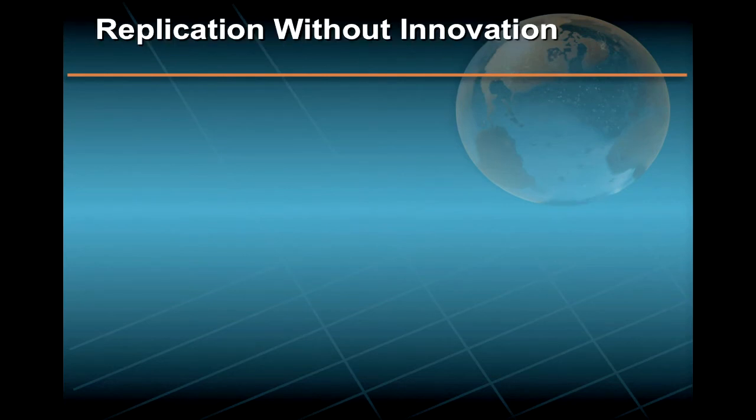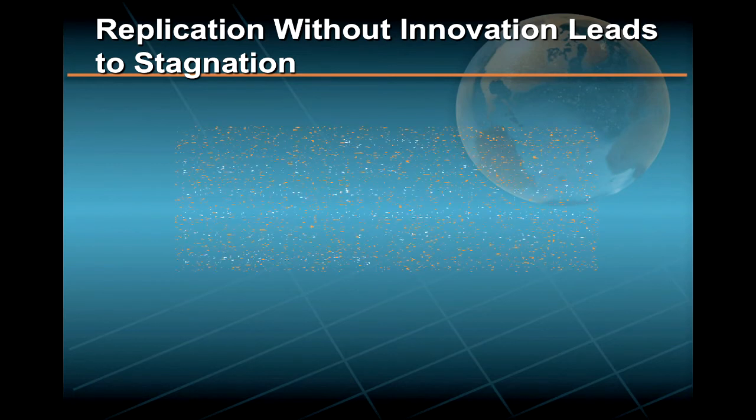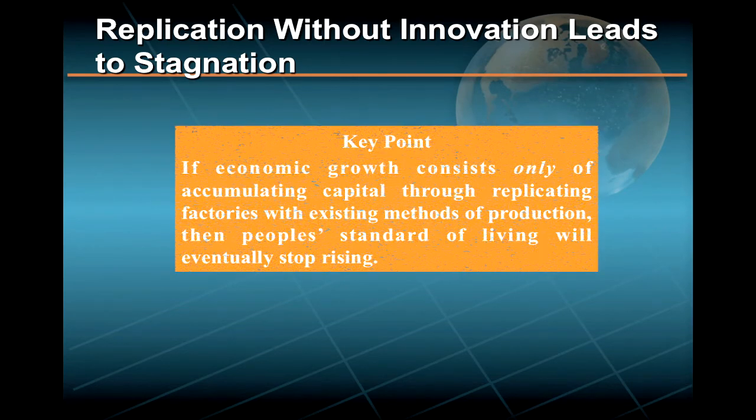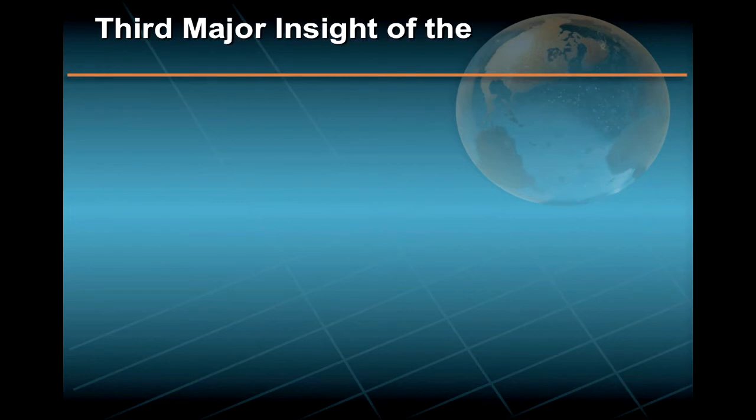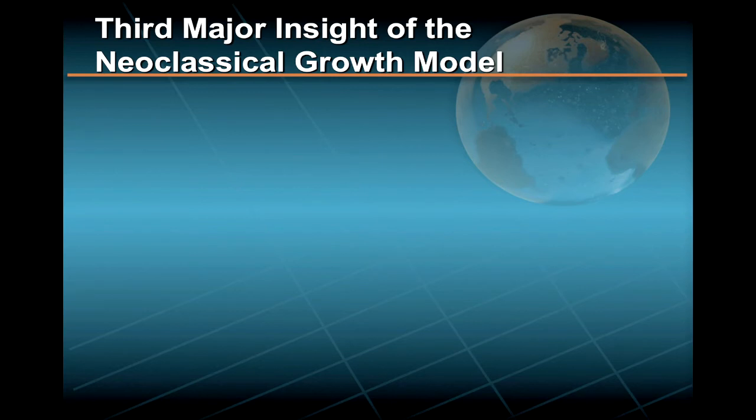Now, this is certainly a far better outcome than the nasty and brutish world of subsistence wages predicted by Malthus. Nonetheless, the long-run equilibrium of the neoclassical growth model makes it clear that if economic growth consists only of accumulating capital through replicating factories with existing methods of production, then people's standard of living will eventually stop rising. And that's why we must come to understand the importance of technological change in averting this fate, as modern economies in this century have so obviously done.